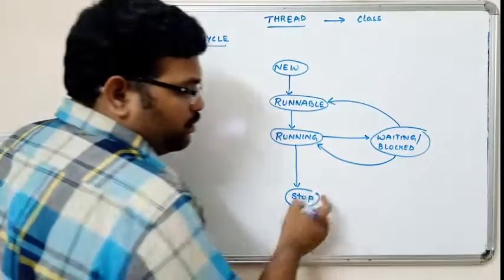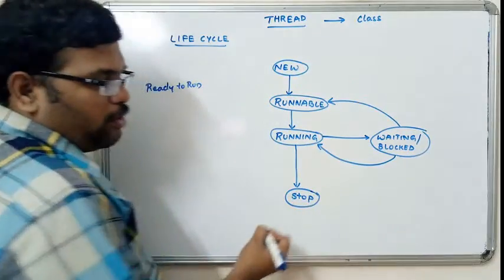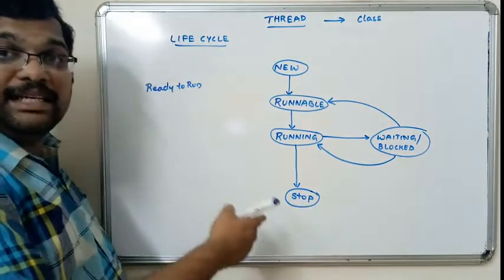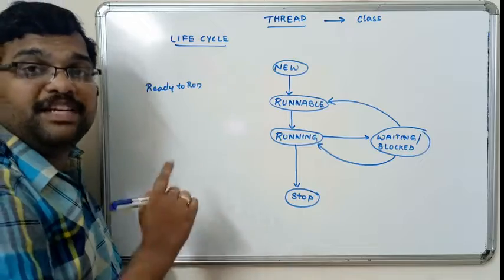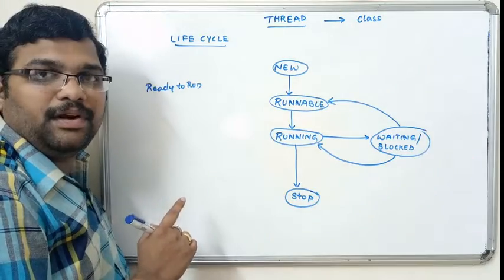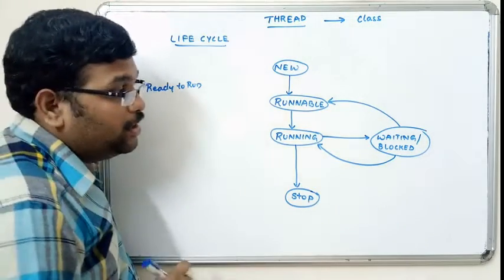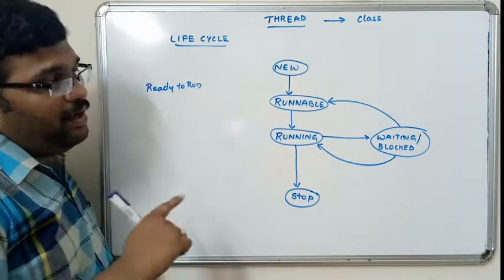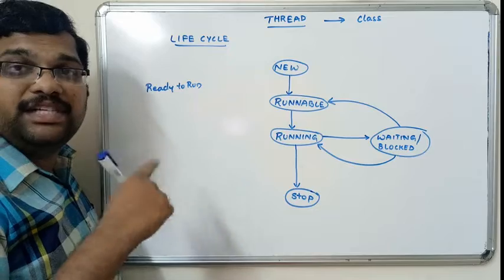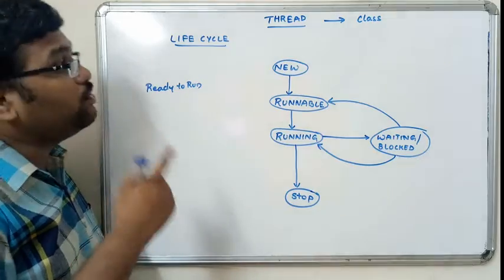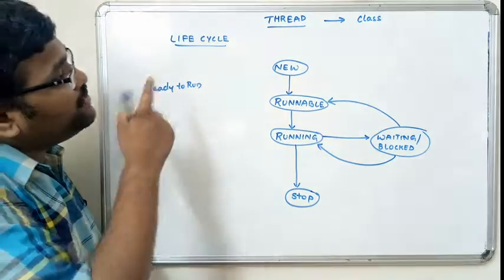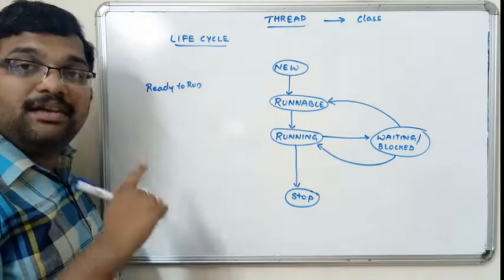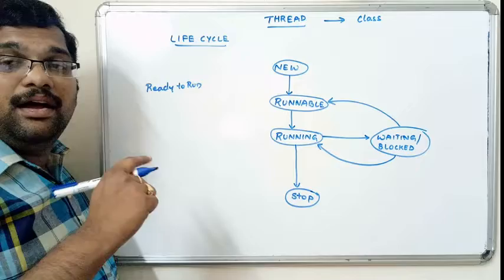If no interruption occurs and execution completes, the thread will move to the stop state, which means termination. So the thread life cycle has five states in total.